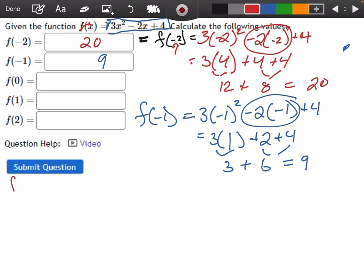We'll do the same thing for f of 0. So 3, 0 squared, minus 2 times 0, plus 4. Well, look, 0 squared is 0, and 0 times 3, that's going to go away. Minus 2 times 0, well, that's going to go away, because it's 0. The only thing we're left with is 4.